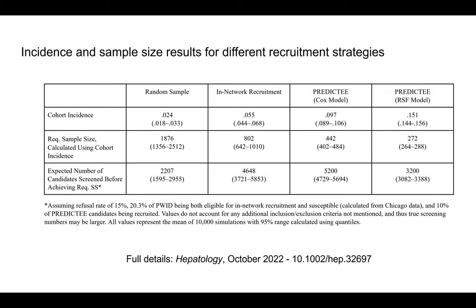Can you tell us a little bit about the model? How was the PREDIC-D model built and what kind of model is it? We used survival analysis models to predict the probability that a candidate would be infected by the end of a given trial period. One model that we used was a Cox proportional hazards model, which is a traditional survival analysis model. The second is random survival forest, which is a machine learning model.